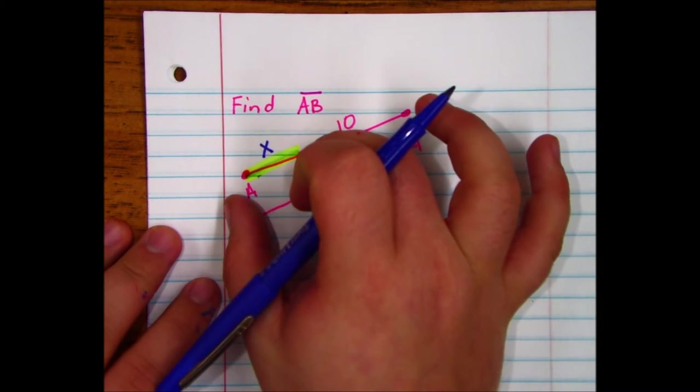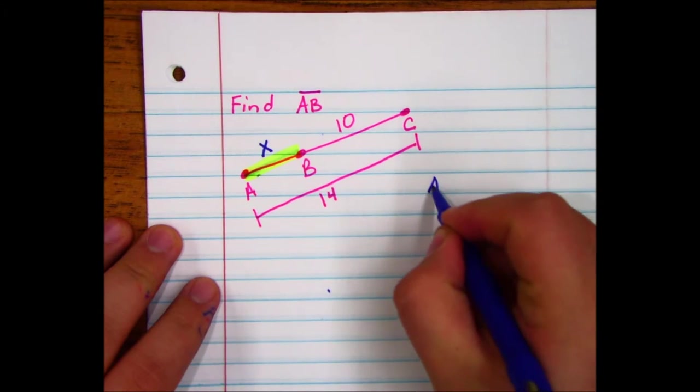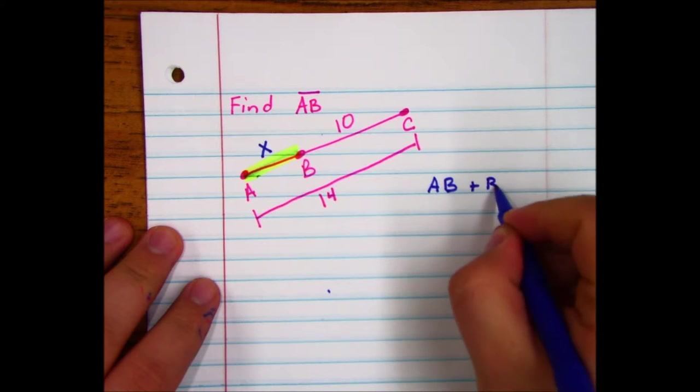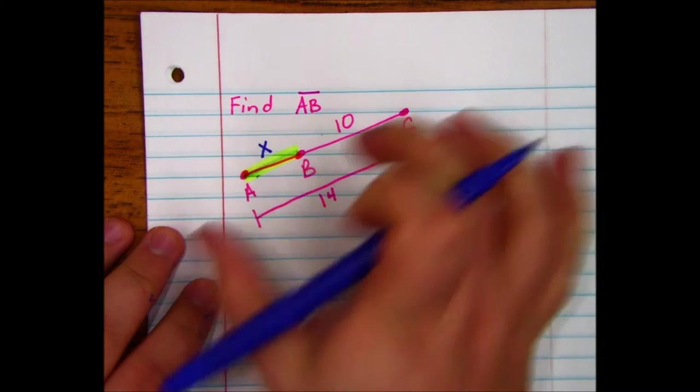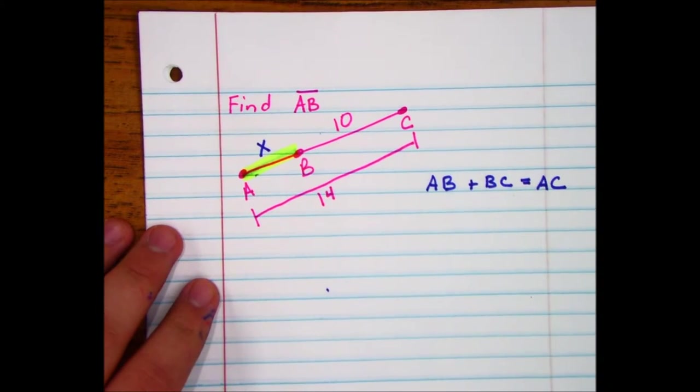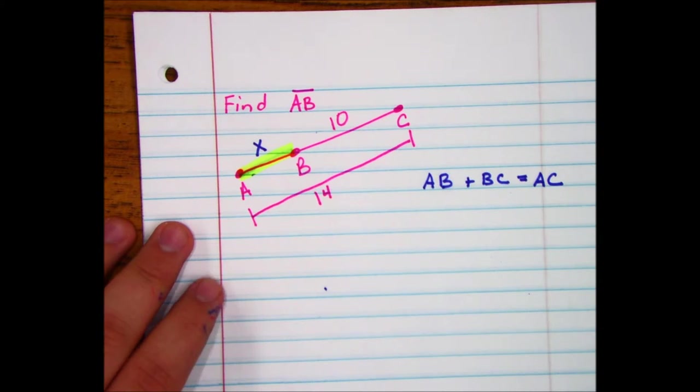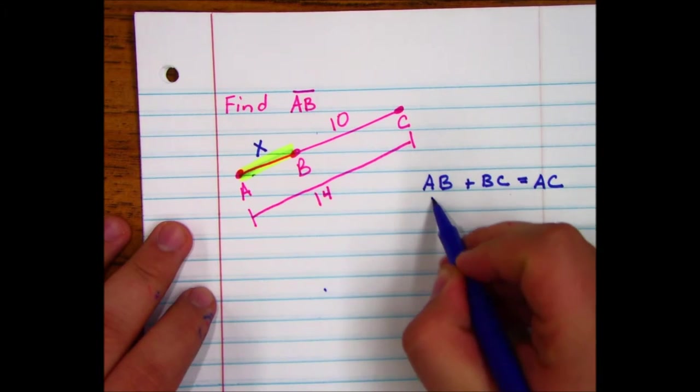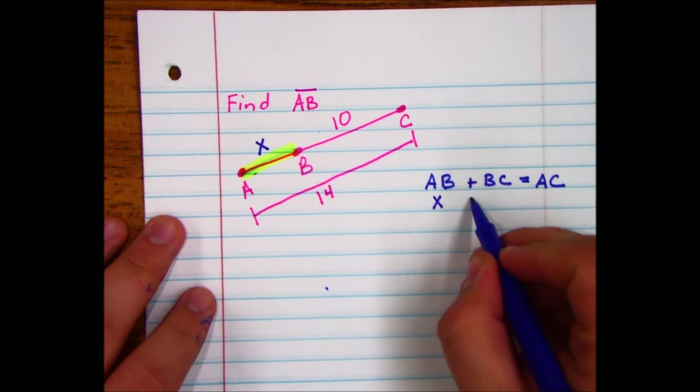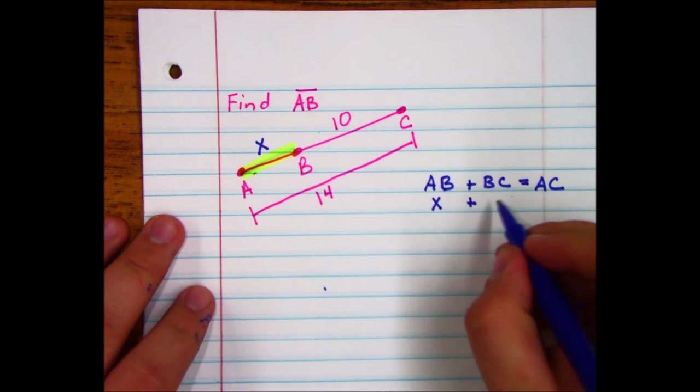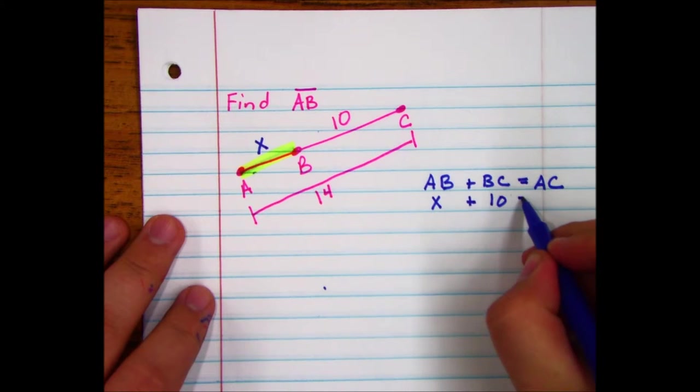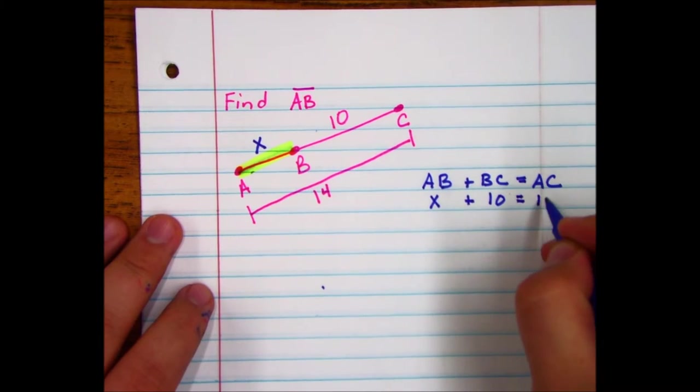Now in previous examples, we have taken the smaller section AB, added it to the smaller section, which in our case here is BC, and it equaled the entire section AC. Now we know that AB is just x because we denoted it as such, because that's what we're finding. Plus BC, which is 10, which equals the entire segment, which is 14.